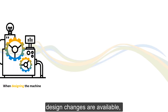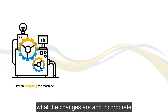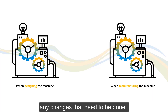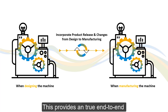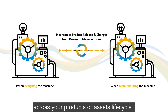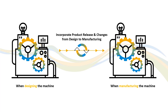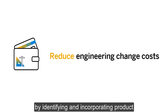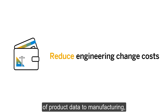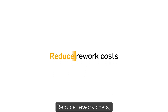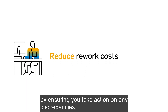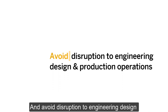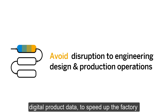Ensure that when new product design changes are available, you can easily understand what the changes are and incorporate any changes that need to be done. This provides a true end-to-end digital thread of your product data. With SAP, you can reduce engineering change costs, reduce rework costs by ensuring you act on discrepancies, and avoid disruption to engineering design and production operations by improving digital product data to speed up factory ramp-up.